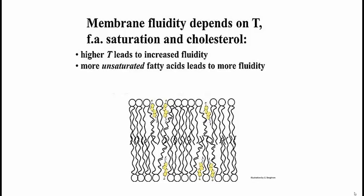The degree of fatty acid saturation in the phospholipids also affects fluidity. In this picture of a phospholipid bilayer, you can see that the kinks introduced into fatty acids by double bonds in unsaturated fatty acids increases the spacing between the phospholipid tails. If you push apart the phospholipids, they will tend to be more fluid. That is why more unsaturated fatty acids lead to greater fluidity.